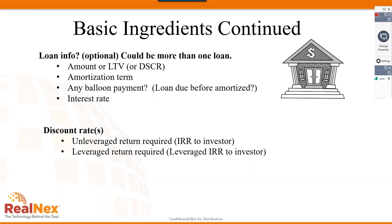Discount rates are needed if you want to calculate an NPV or determine what price you'd be willing to pay for the property — whether on an unlevered or levered basis. The program figures out the price you'd pay to achieve that required rate of return. Unlevered and levered discount rates would normally differ because, with a loan, you'd expect to earn a higher rate of return on your equity investment.